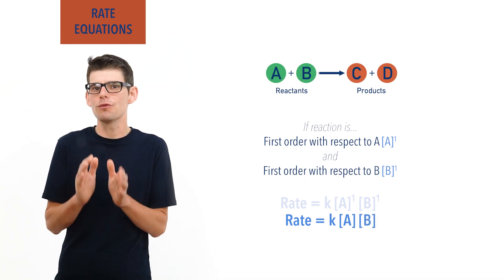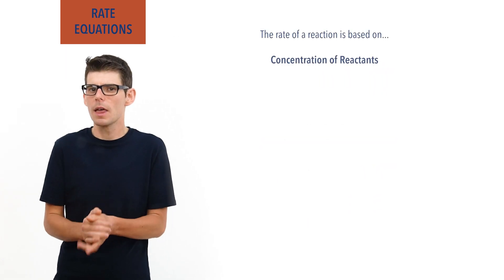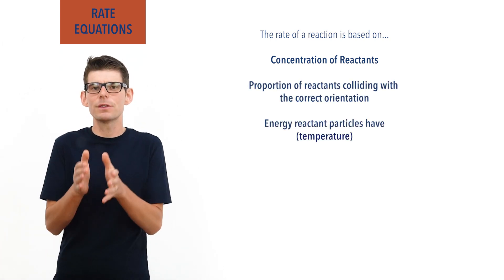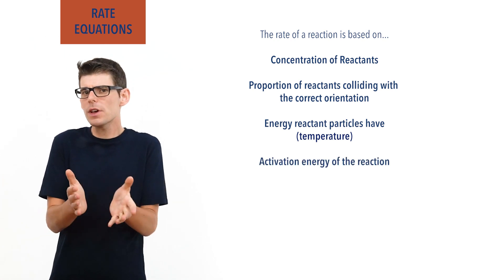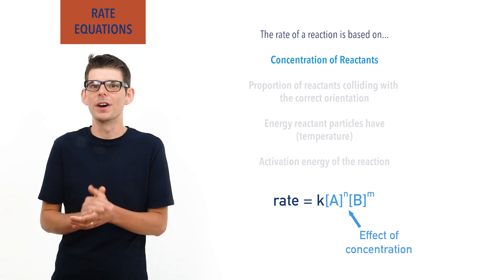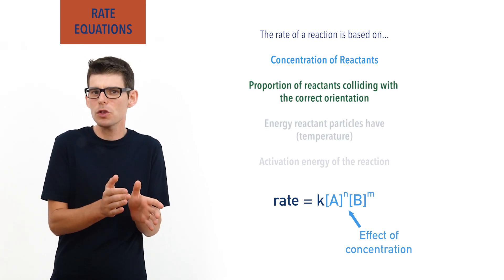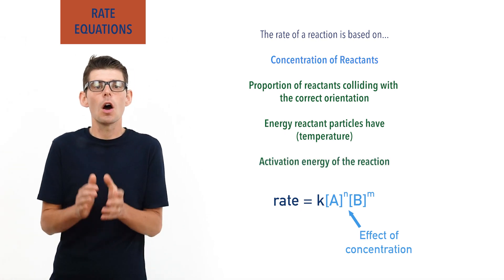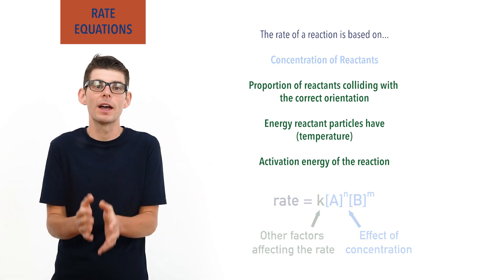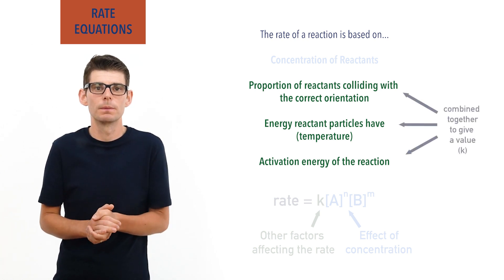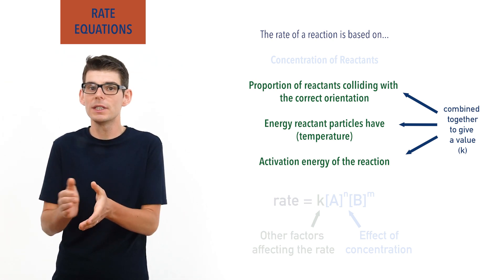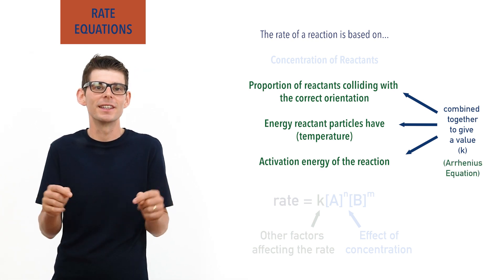Now, the rate of a reaction is based on the concentration of reactants, the proportion of reactants colliding with the correct orientation, the temperature of the system, and the activation energy for the reaction. At first glance, a rate equation only seems to deal with the concentrations of reactants. However, the proportion of reactants colliding, the temperature of the system, and activation energy for the reaction are all accounted for in the rate constant K. All these factors can be combined together and their combined effect on the rate given as a value. There is actually a separate equation we can use to calculate K based on these factors — it's called the Arrhenius equation. That's been covered in a separate video; check the links in the description below.